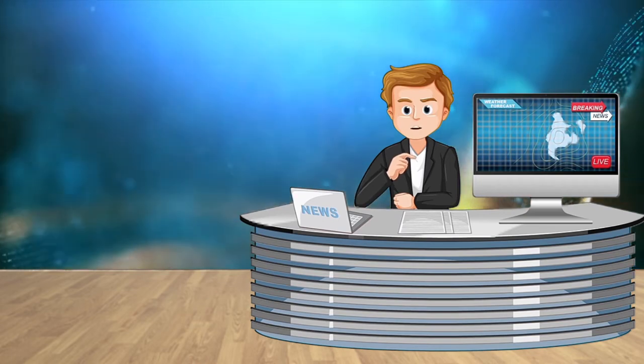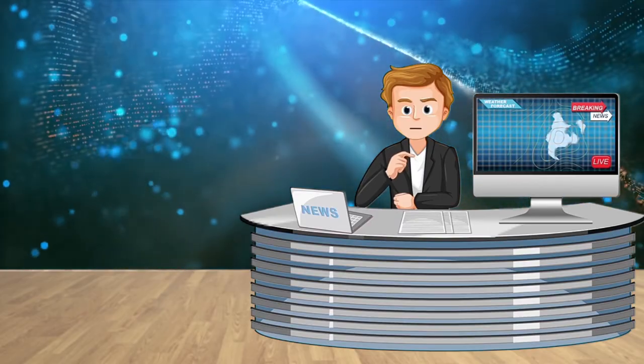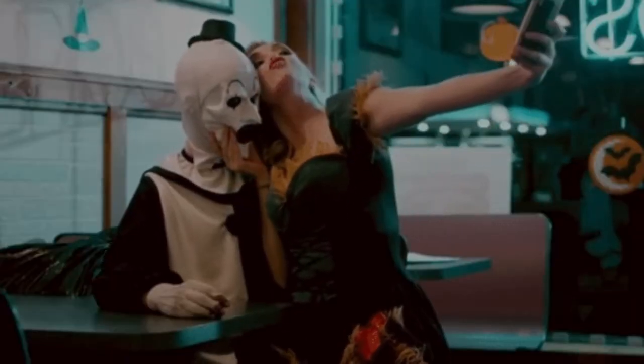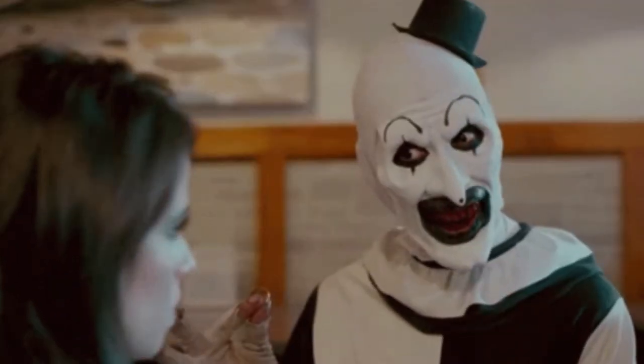The first Terrifier centered around two young women on Halloween night. While eating at a small restaurant, Art the Clown dropped in and immediately connected with one of them, trying to woo her with tricks and doing every creepy thing imaginable to get her attention.